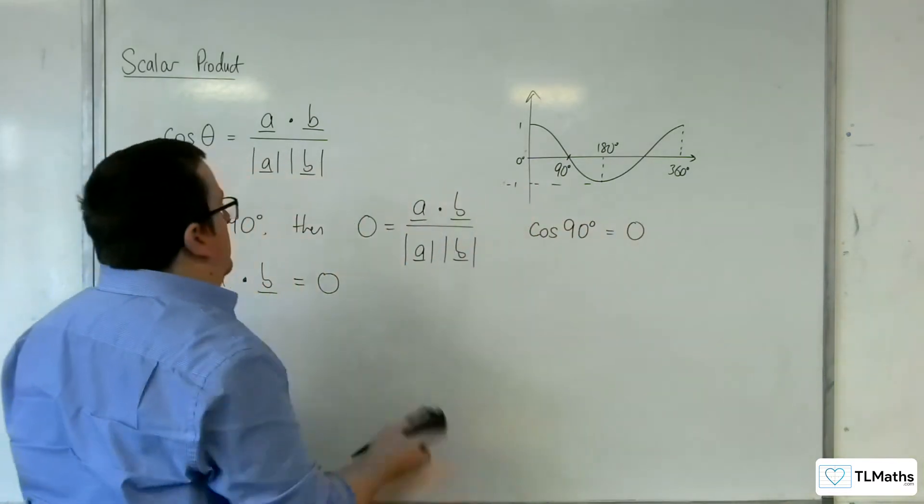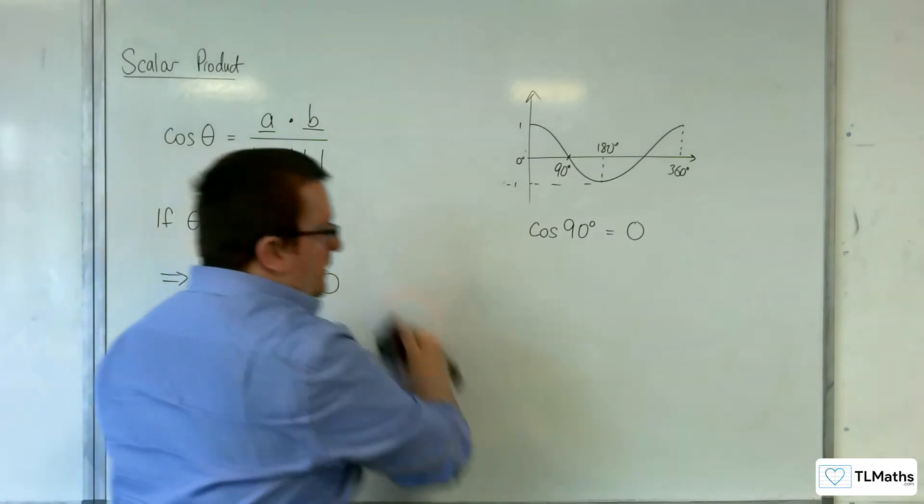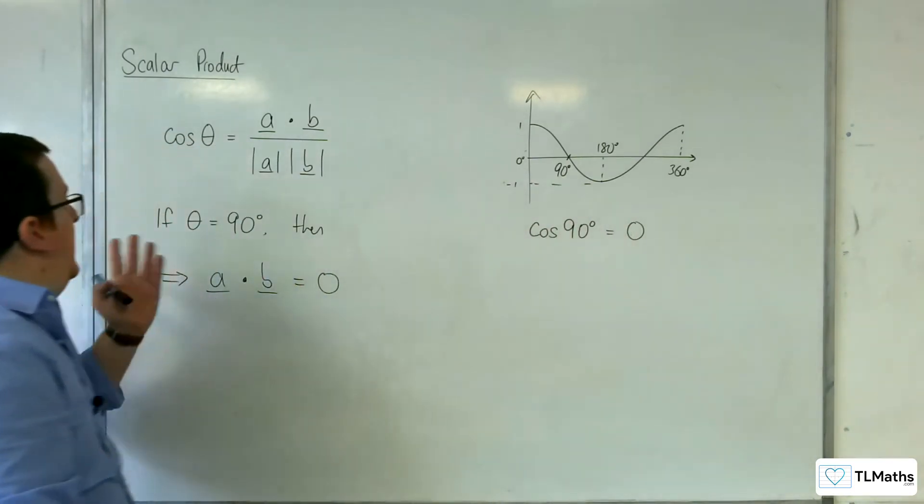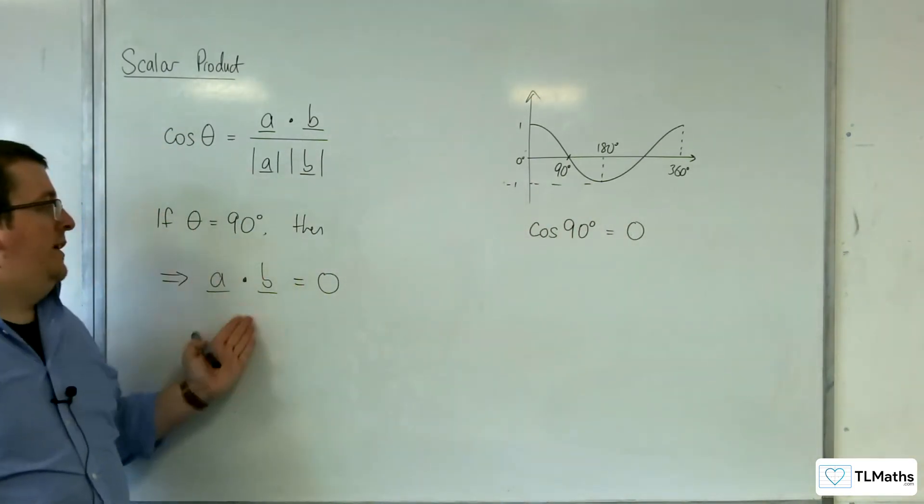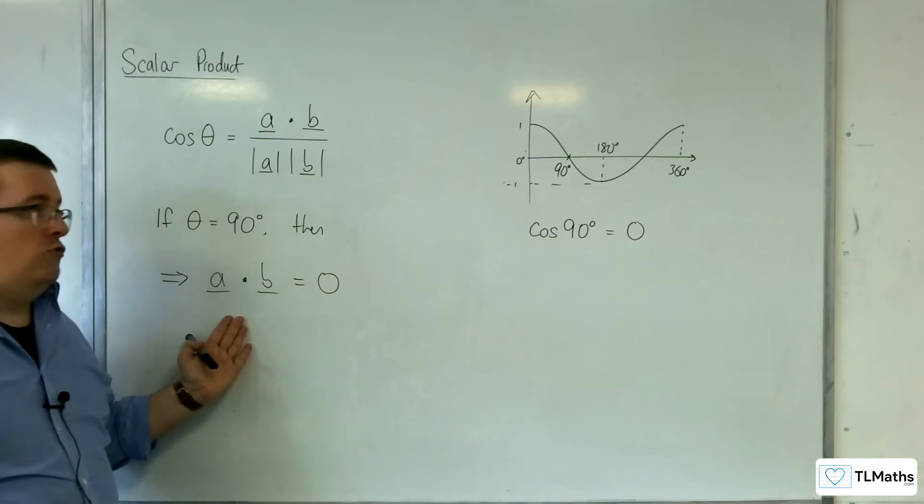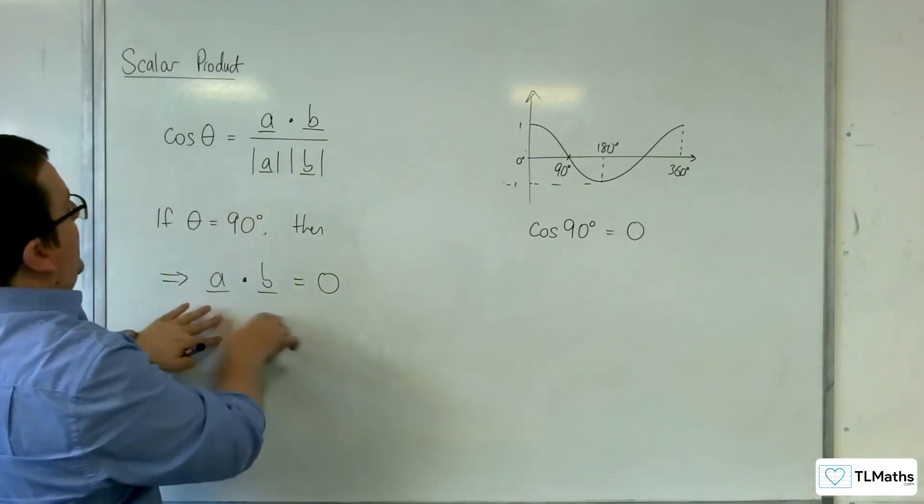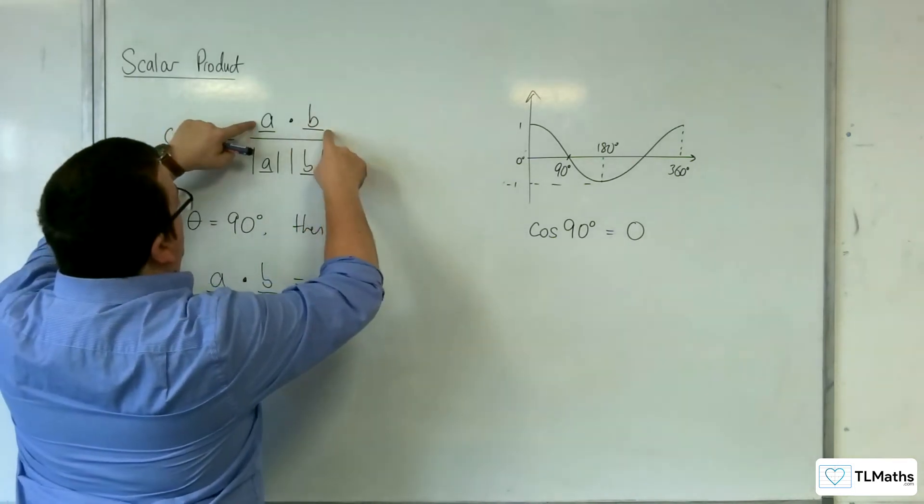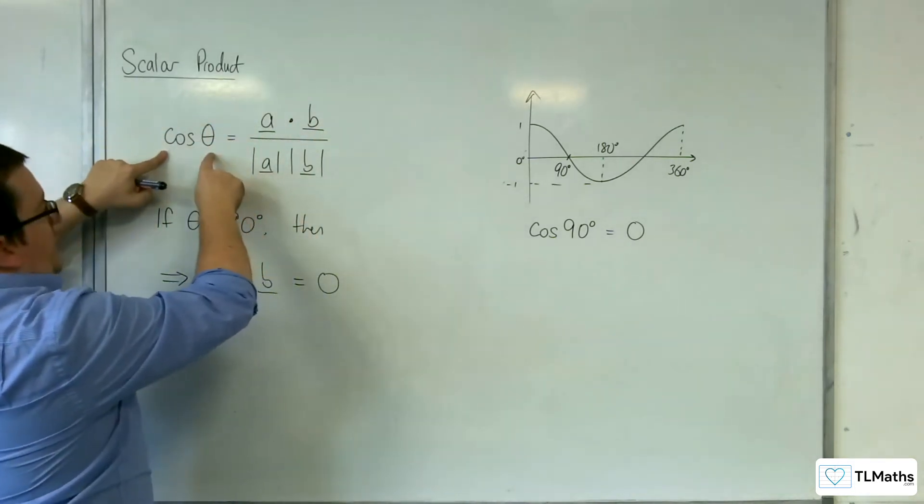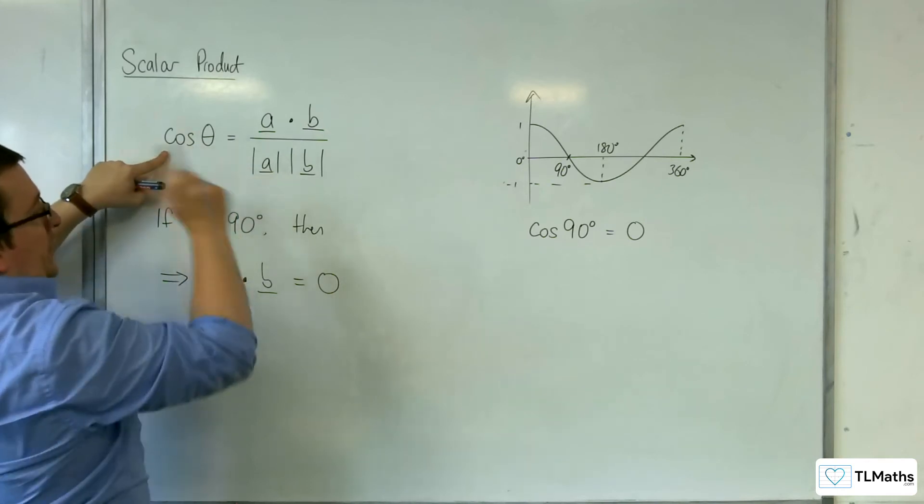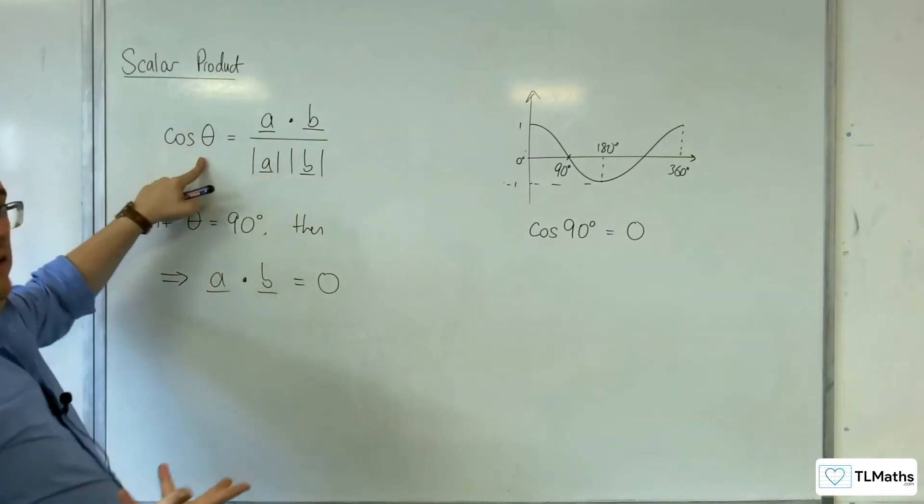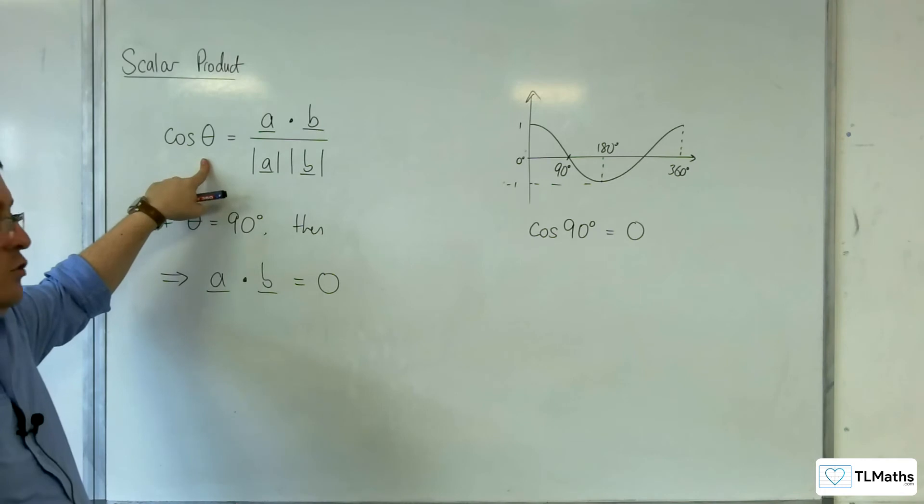So essentially, if theta is 90 degrees, then a dot b is equal to 0. And if a dot b is equal to 0, then cosine theta will be equal to 0, and so the angle between the two vectors will be 90 degrees.